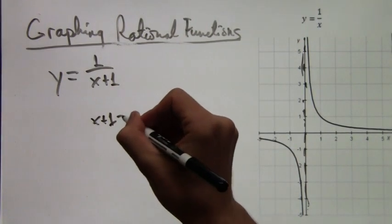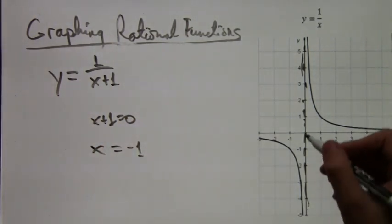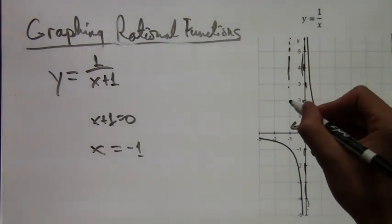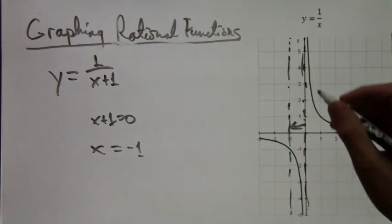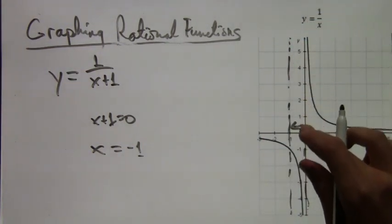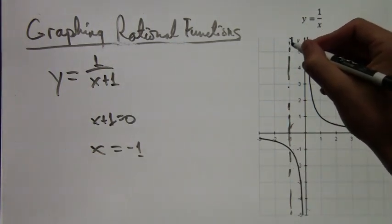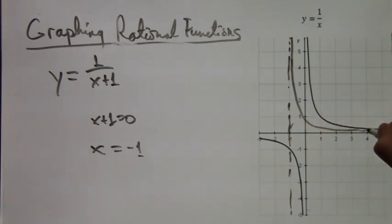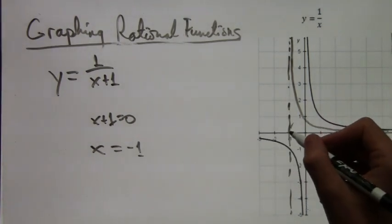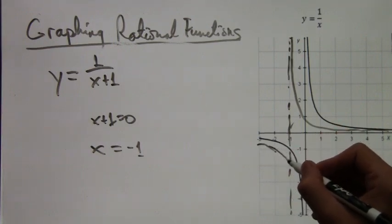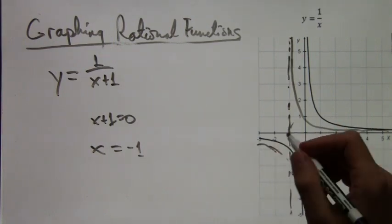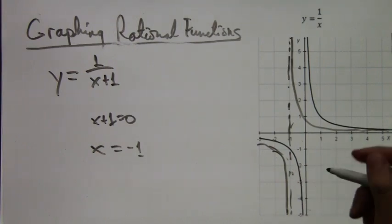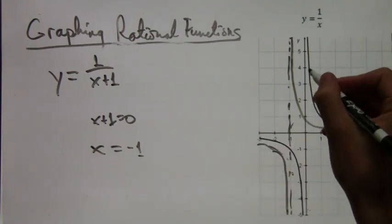And so now we have a different example, y equals 1 over x plus 1. And the asymptote is going to be where x plus 1 equals 0. Because the whole point is that dividing by 0 is not allowed. And where that happens, you have this really high beginning or really low beginning from the different sides of the asymptote. And here the asymptote is at x equals negative 1. So we've shifted the entire function over by one unit to the left.